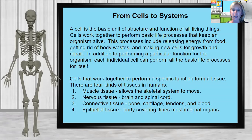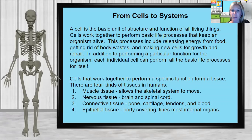Cells working together to perform specific functions form a tissue. There are four kinds of tissues in humans. The first is muscular tissue, which allows the skeletal system to move — there are two types: voluntary and involuntary. Then we have nervous tissue: your brain and spinal cord, which controls all the functions of your body. Third is connective tissue: our bones, cartilage, tendons, and blood. And finally, epithelial tissue — body coverings — your skin, as well as the lining of your various organs.